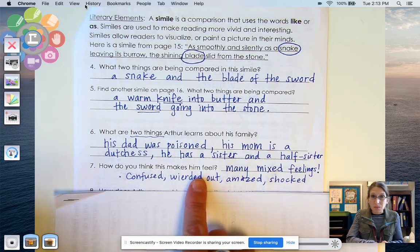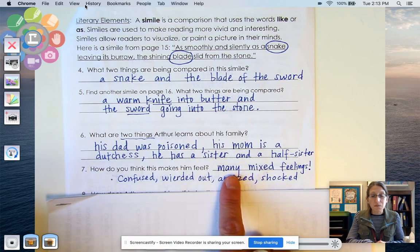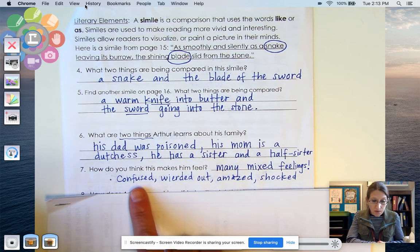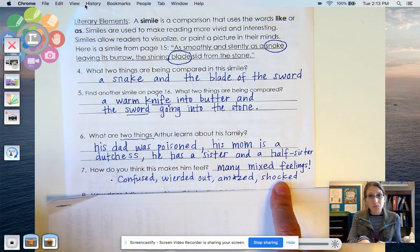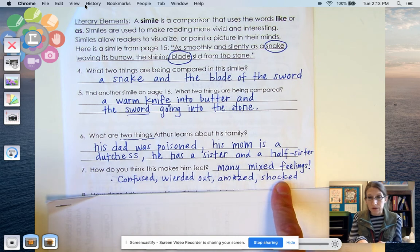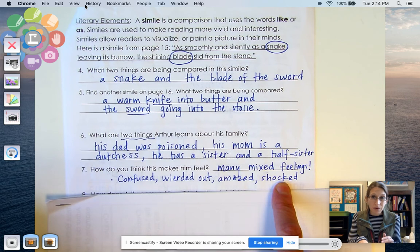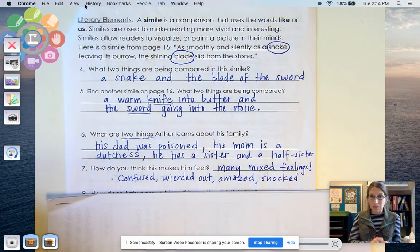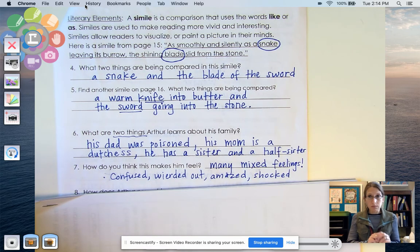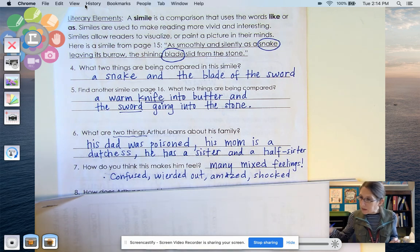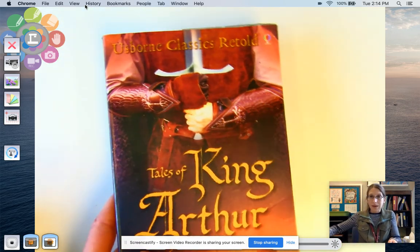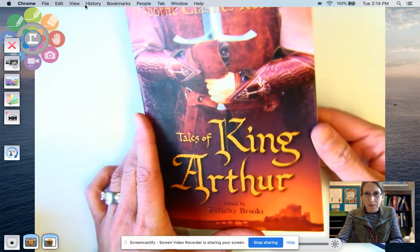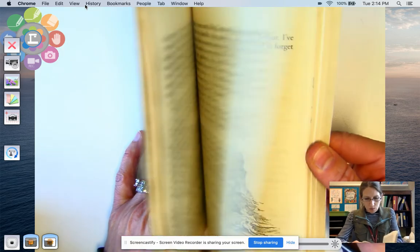So number seven. How do you think that makes him feel? And I was thinking it makes him feel many mixed feelings. Confused. Weirded out. Amazed. Shocked. I could add a few more things. Maybe sad. You know, I would be sad if I found out that my big brother was not really my big brother. Or my dad was not really my dad. That would be really sad. Confusing. Shocking. Woo. Okay. So second graders, what we are going to do is, we're going to look at a few more questions together after we read the end of the story. The end of chapter one, I should say. Not the end of the story. All right. So we're going to open up to page 20.